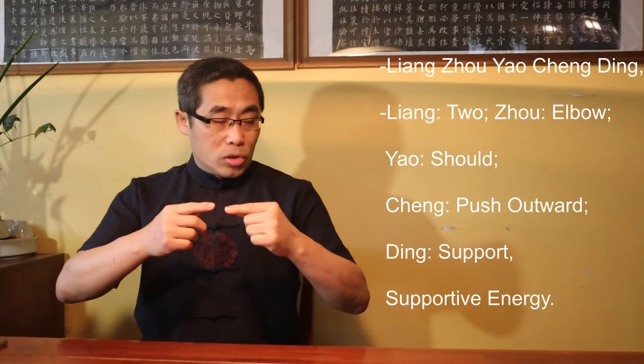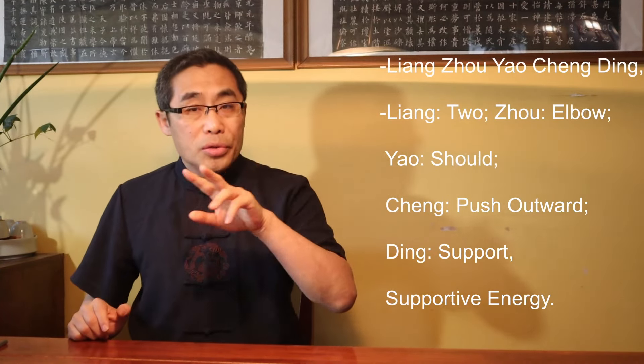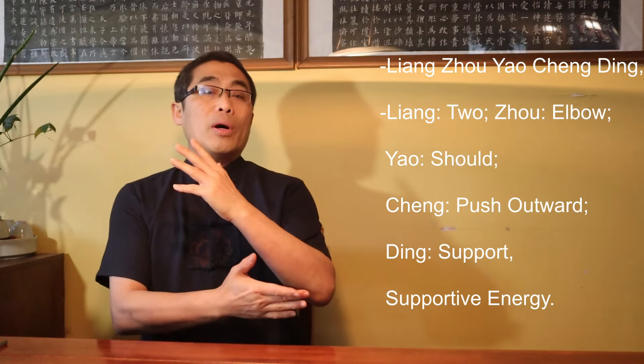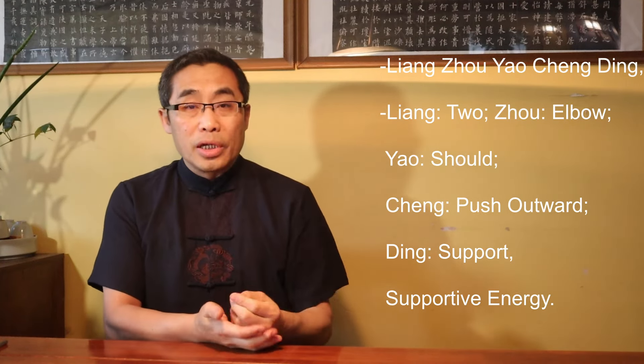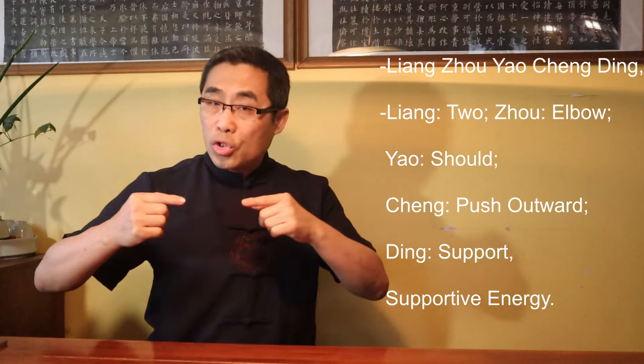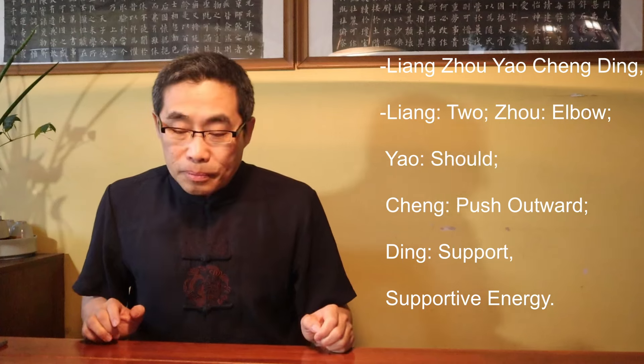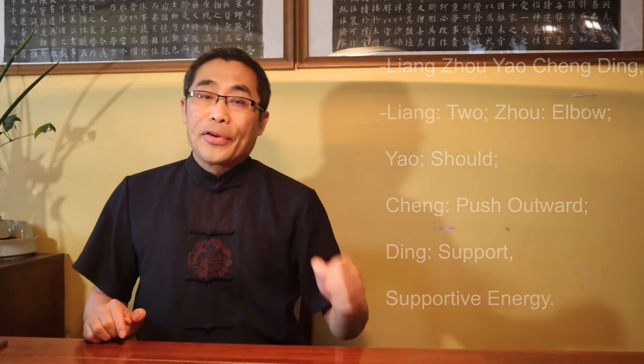The second sentence, Liang Zhou Yao Cheng Ding. Liang means two, Zhou means elbow, Yao means should, Cheng means push outward, Ding means support or supportive energy. Put together, it means that elbows should extend outward with supportive energy.